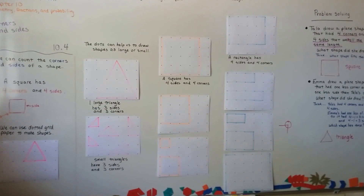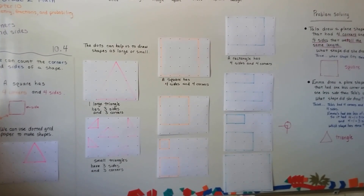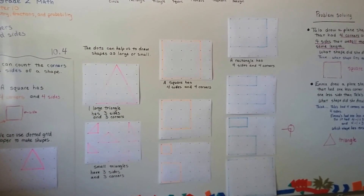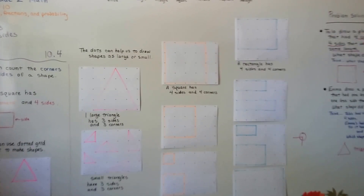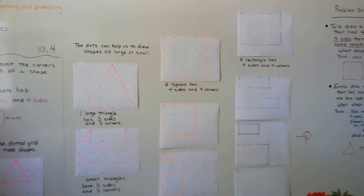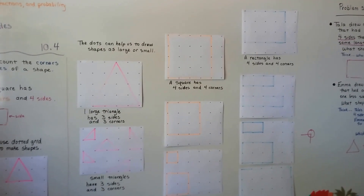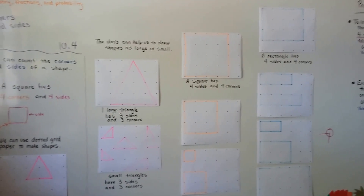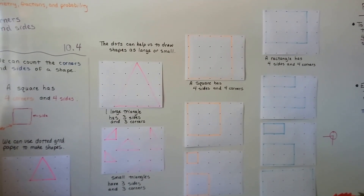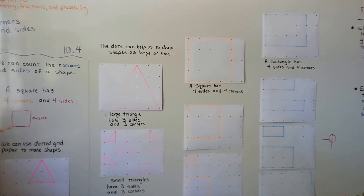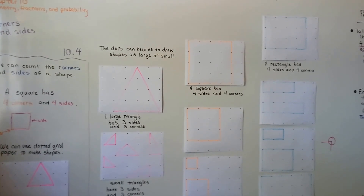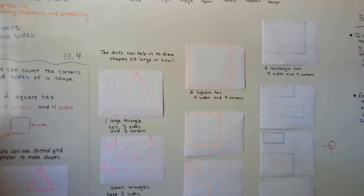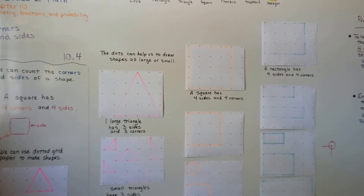We're going to continue on talking about shapes, and we're going to talk about shapes that are equal to each other and are the same shape — it's called congruent. I hope I'll see you there. Bye.